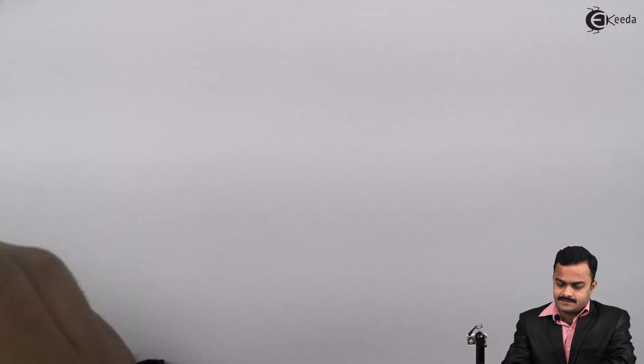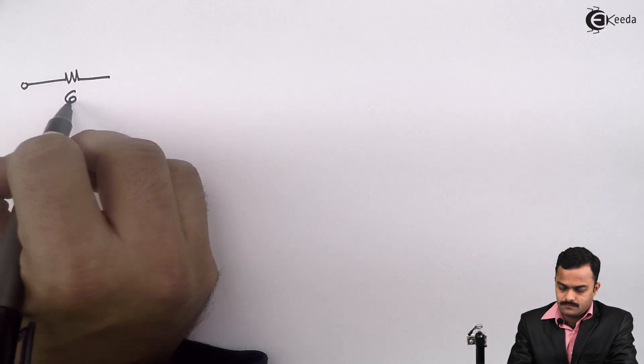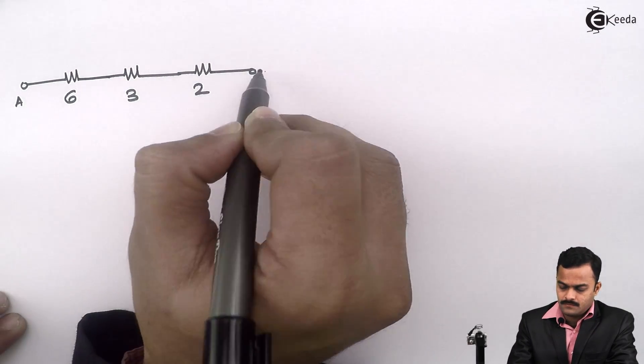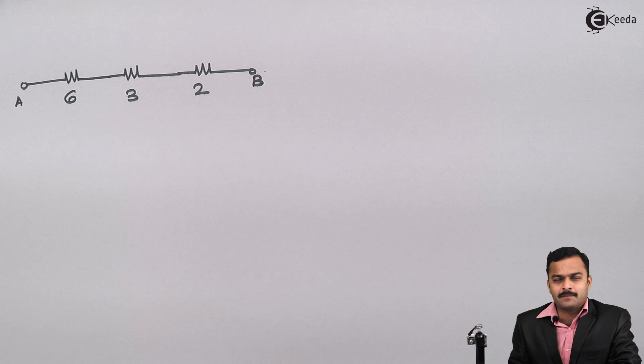I take a simple circuit like this, and if I ask what is R_AB, the problem will become very simple. It's a straightforward 6 plus 3 plus 2, which is nothing but 11. But hold on, let's make some modification to the circuit.